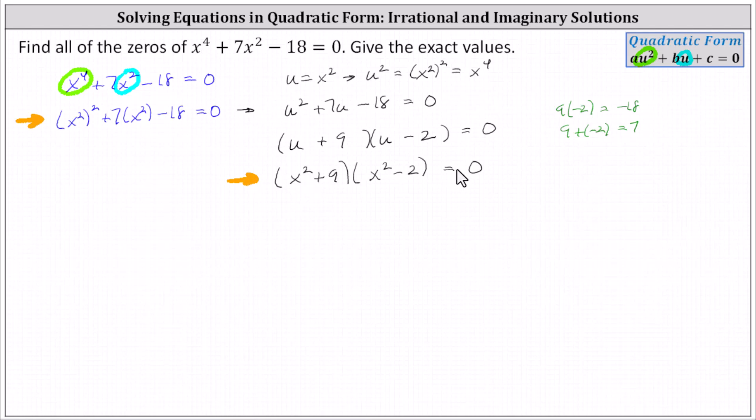At this point, we know this product must equal zero, which indicates x squared plus nine must equal zero, or x squared minus two must equal zero.